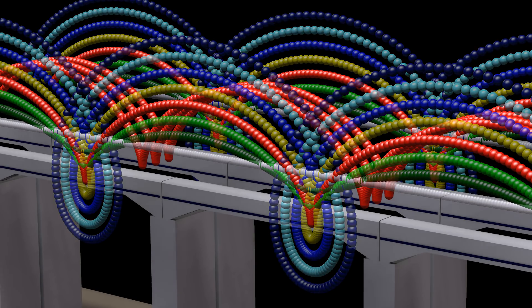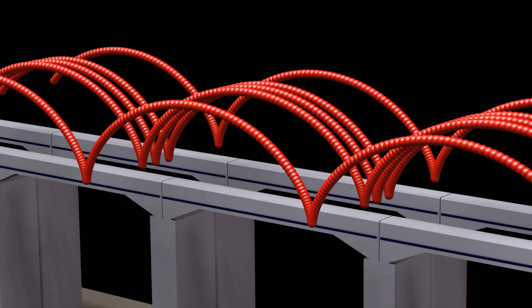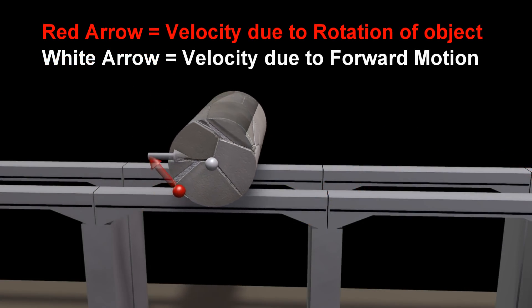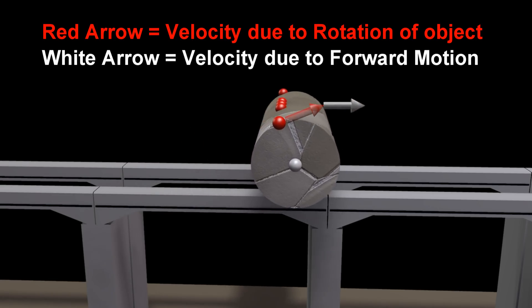The velocity of each red dot is the sum of the velocity due to the rotation, represented by the red arrow, plus the velocity due to the forward motion of the object, represented by the white arrow.